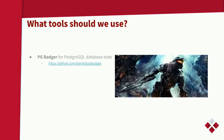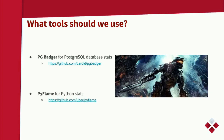So what tools should we use? The first one is PG Badger. This gets all database stats from the PostgreSQL log output and generates a formatted report — offering the slowest queries or most frequently executed queries. Another tool is PyFlame for the Python section. This shows you the slow method and which line of code in Python.